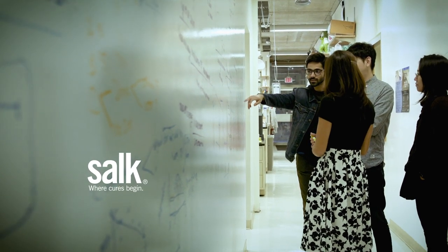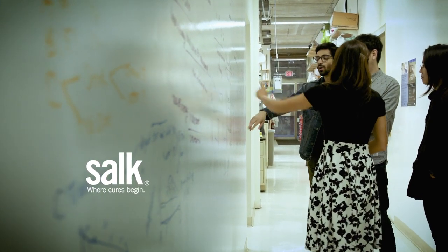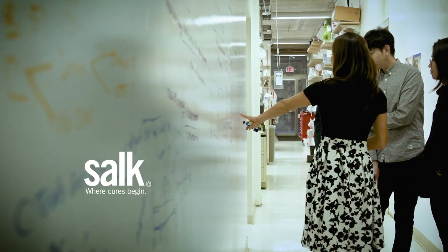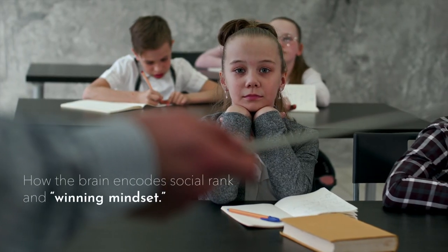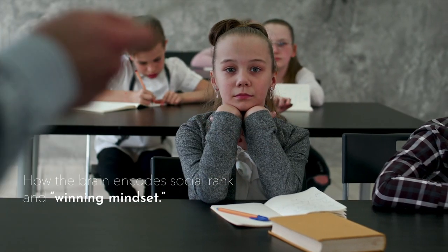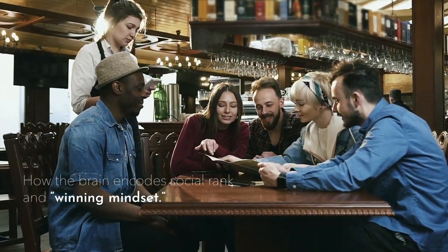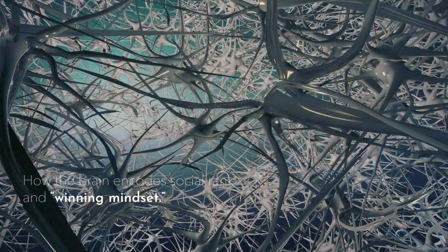For a long time I've just been curious about how individuals know their place within a group. What is my role? What is my rank? How do I know someone else's rank relative to my own? And how is that represented by cells and synapses in the brain?